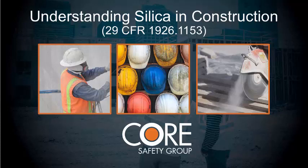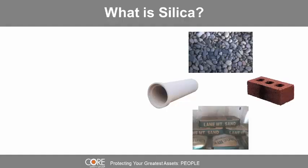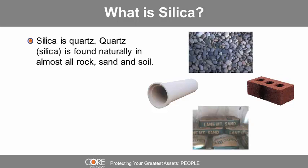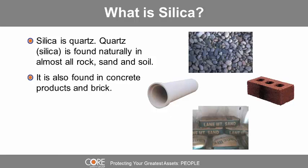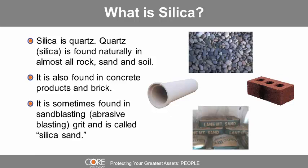Understanding silica in construction, hosted by Core Safety Group. Silica is quartz, and quartz is naturally found in almost all rock, sand, and soil. It's also found in concrete products and brick. Sometimes it's found in sandblasting grit, and it's called silica sand.